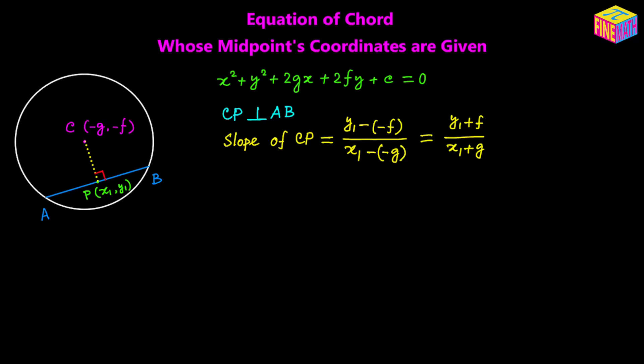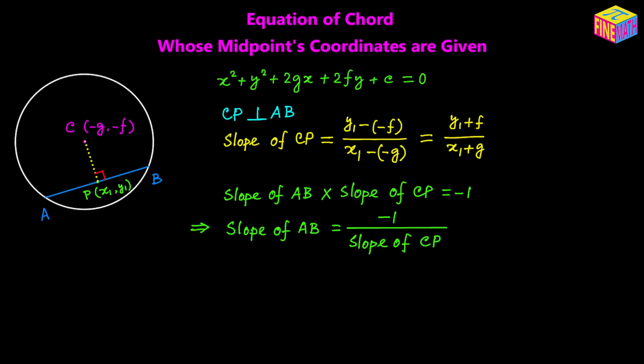Considering the slope of line CP and the slope of chord AB — because they are perpendicular to each other, the product of their slopes equals negative 1. I have already created a separate video on this; the link is in the description. So the slope of AB equals negative 1 over the slope of CP, which gives us negative 1 over (y sub 1 plus f over x sub 1 plus g), simplifying to negative (x sub 1 plus g) over (y sub 1 plus f).